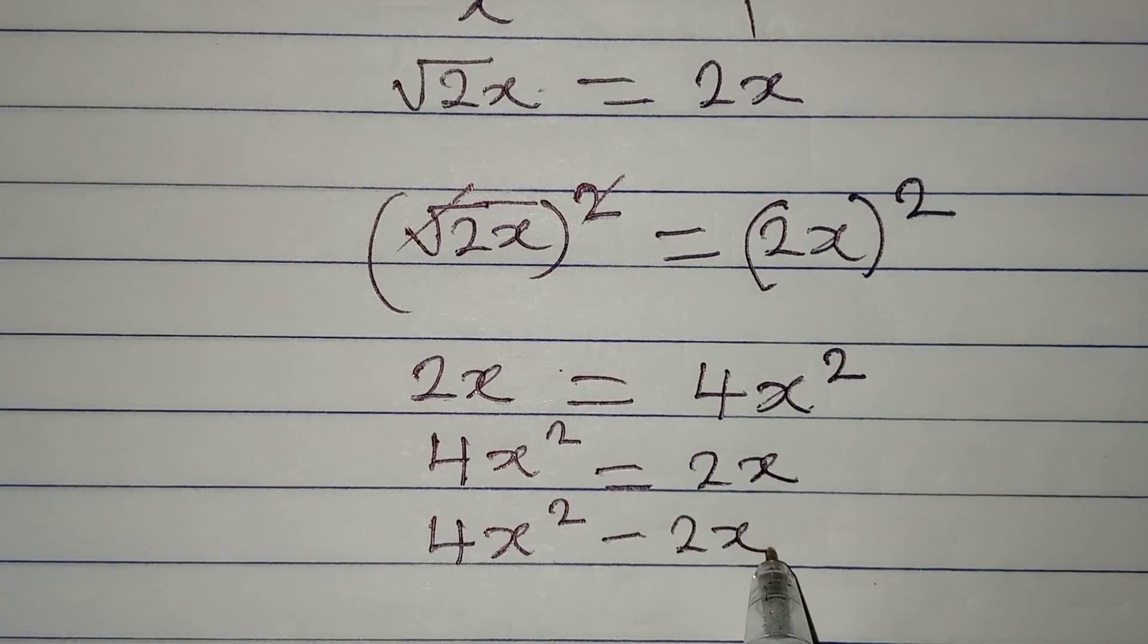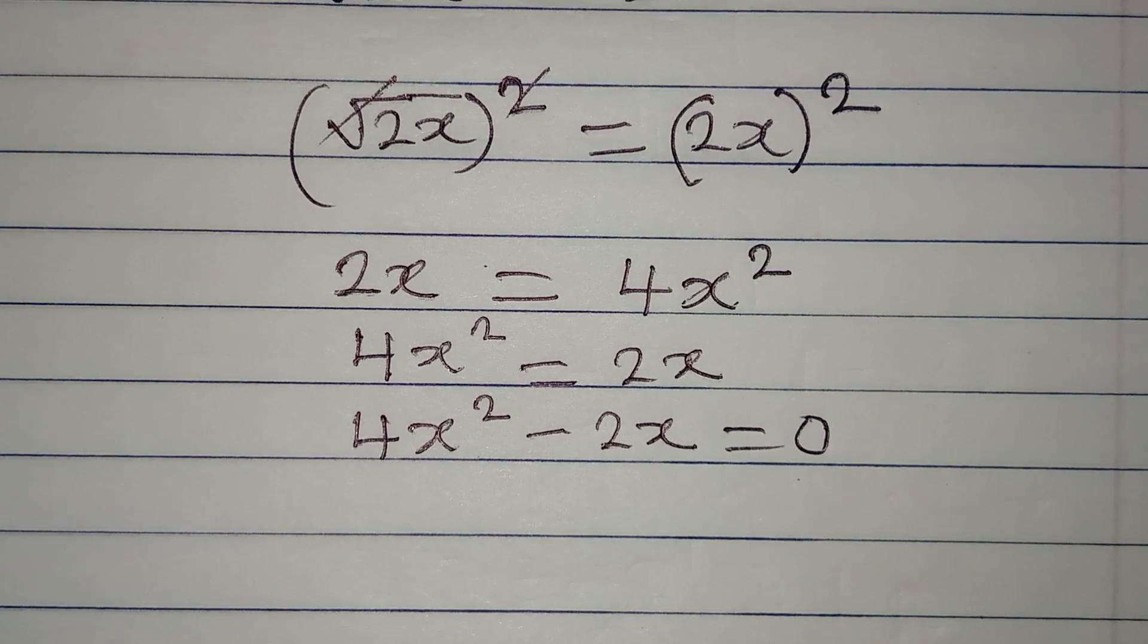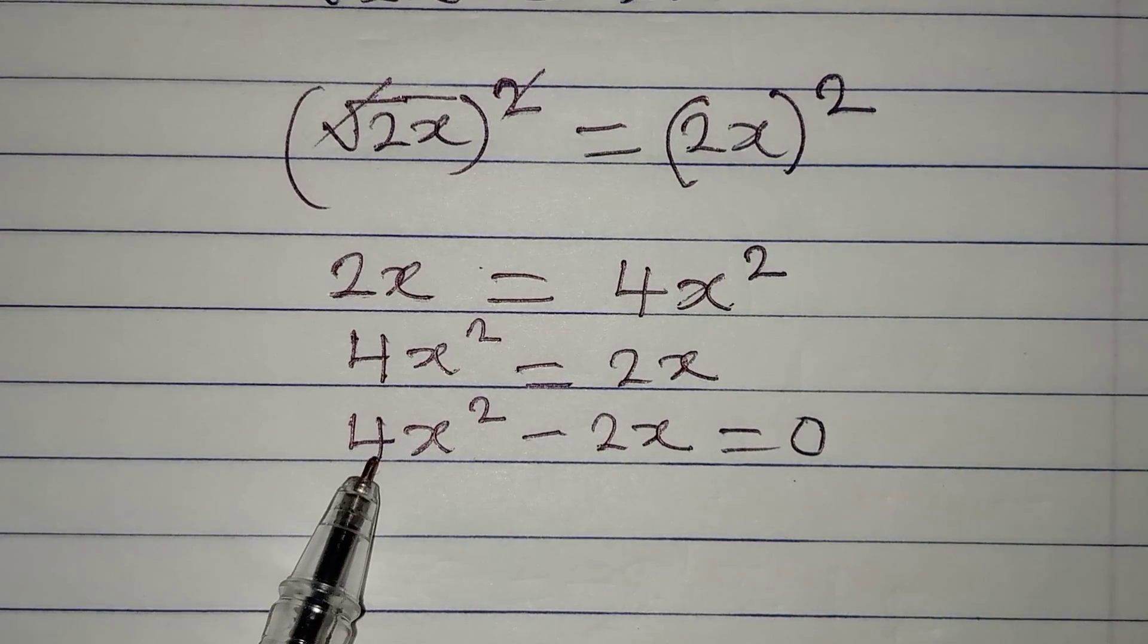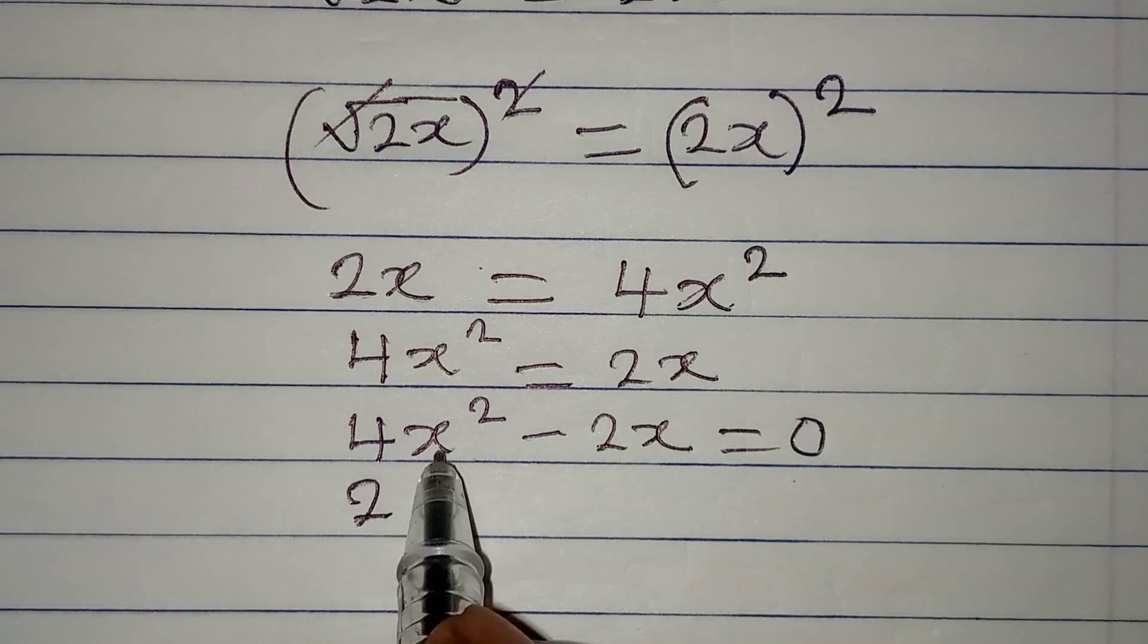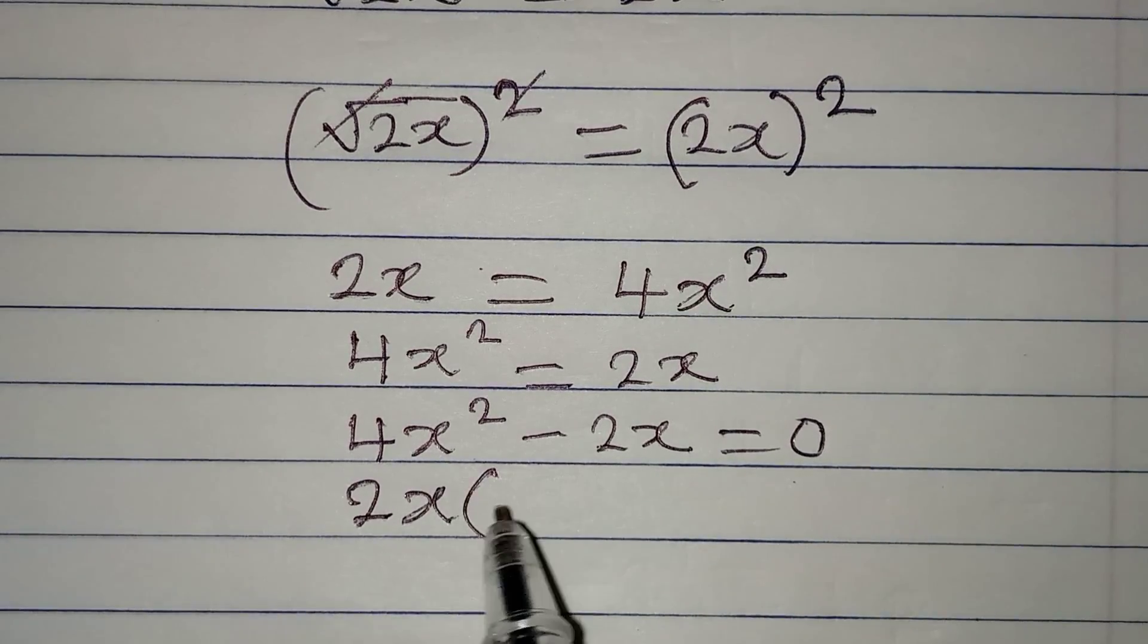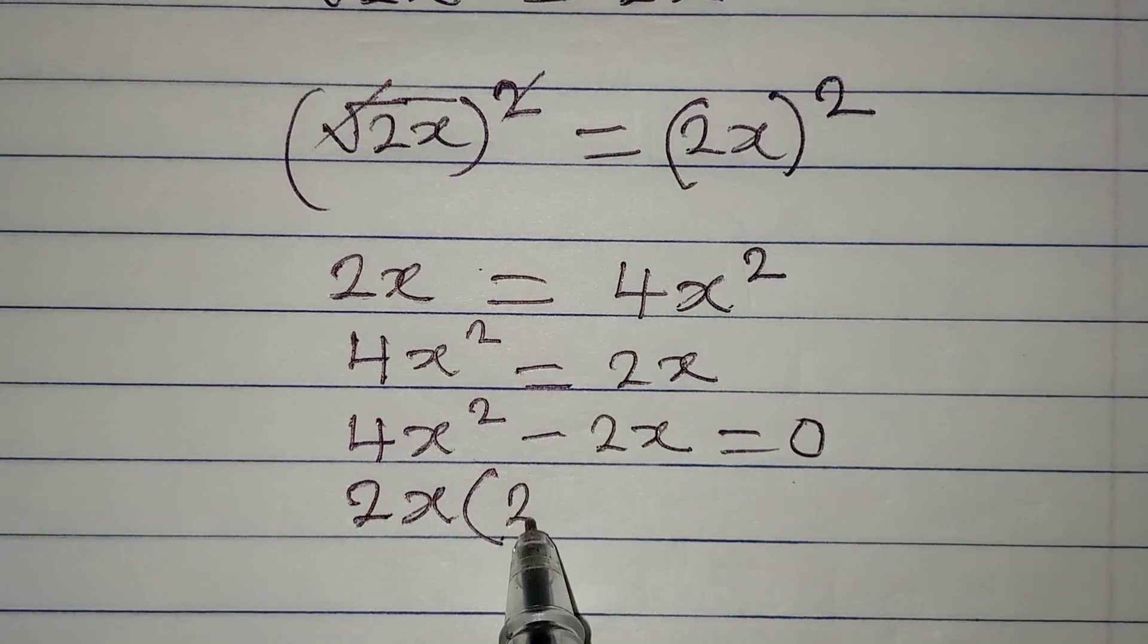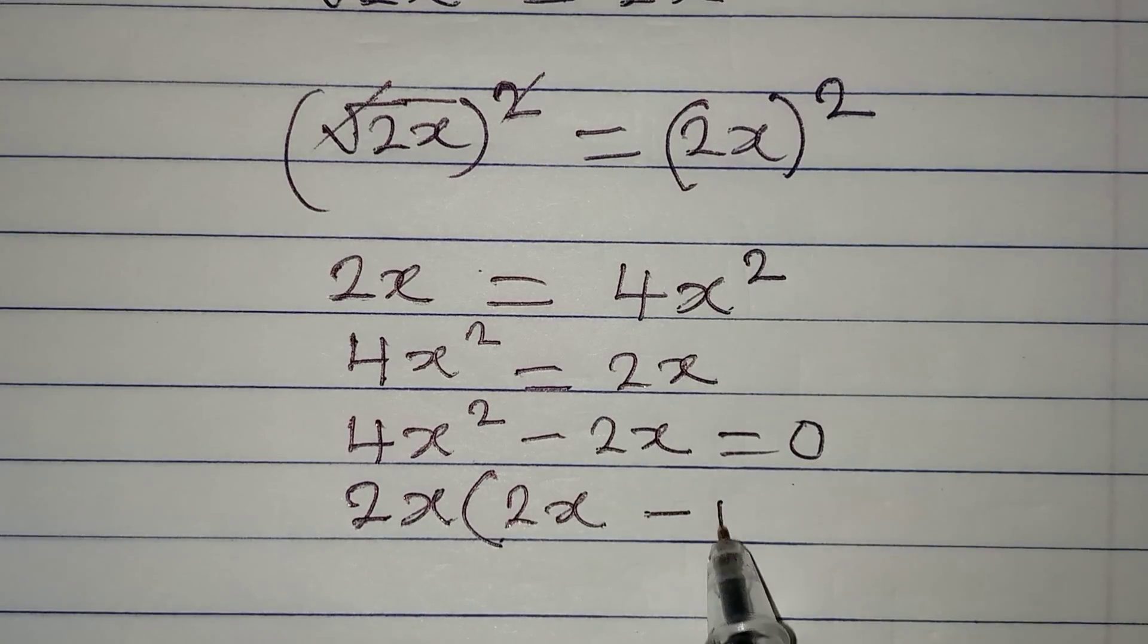Now what is common to these two? We have x here, we have x there. 2 is found here, 2 is also there. So I'll bring out 2 first, x is there, bring it out. Then 4x squared divided by 2x will give us 2x, then minus 2x divided by 2x will give 1. This will be equal to 0.